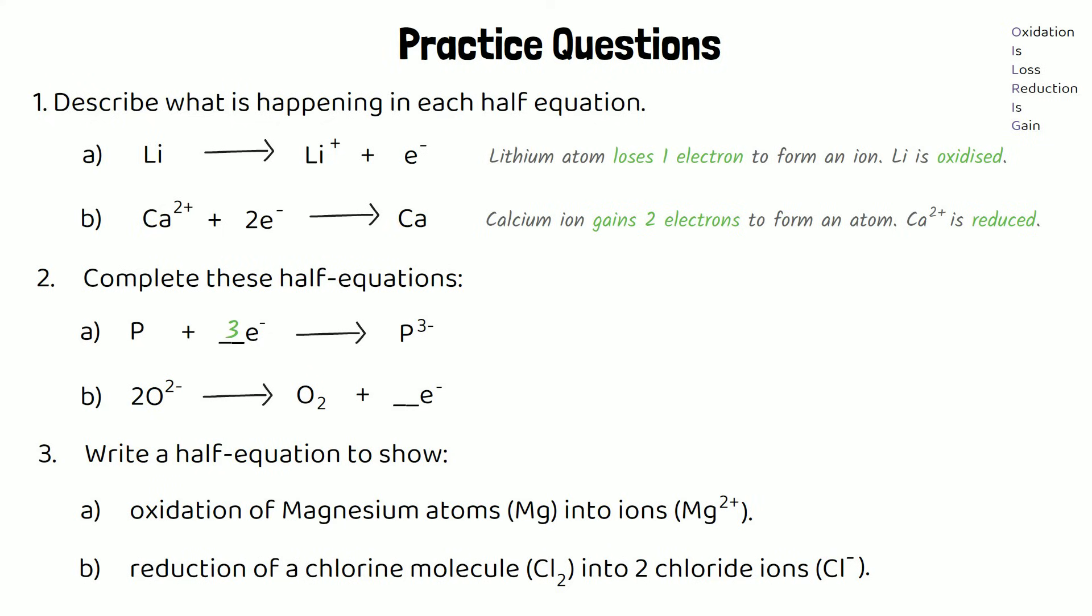For 2A, we need three electrons to balance that half equation to form a P3- ion. And for part B, because we've got two 2- ions, we will produce four electrons.